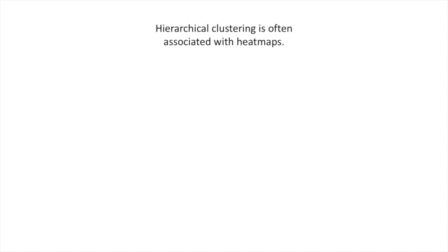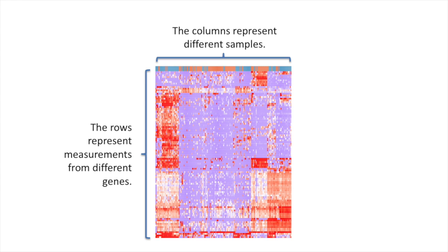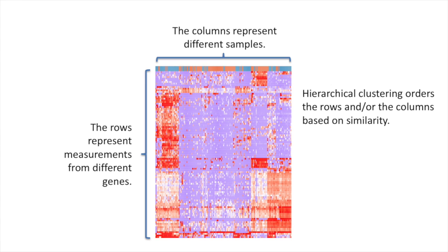Hierarchical clustering is often associated with heat maps. If you're not already familiar with what heat maps are, just know that the columns typically represent different samples, and that the rows typically represent measurements from different genes. Red typically signifies high expression of a gene, and blue or purple means lower expression. Hierarchical clustering orders the rows and/or the columns based on similarity, making it easy to see correlations in the data.